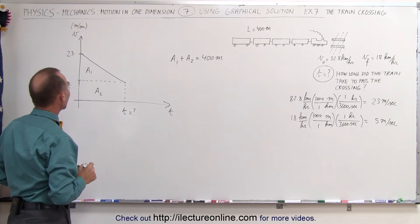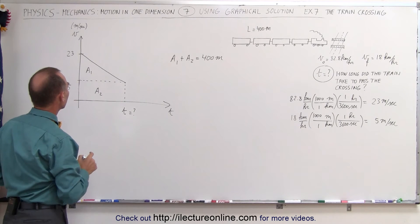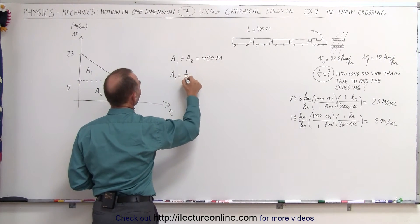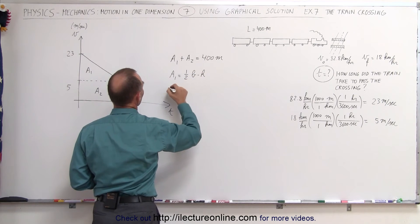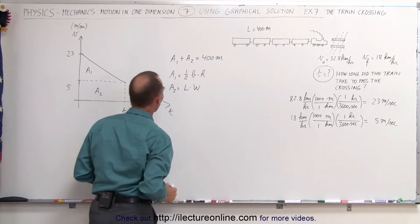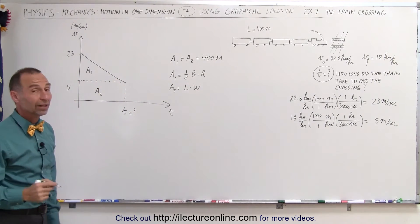Now, how do we find A1 and A2? Well, we know that A1 by definition is equal to one half the base times the height, and A2 by definition would be the length times the width of the rectangle.